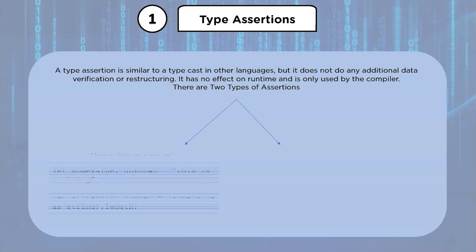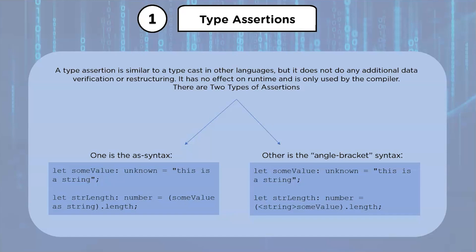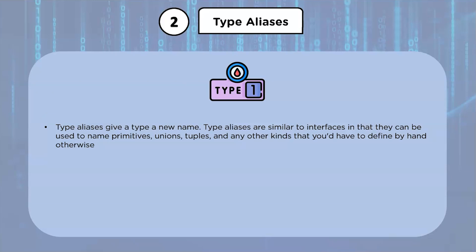There are two types of assertions: the as syntax and the angle bracket syntax. Both versions are identical — choosing one over the other is primarily a matter of preference. However, only the as-style assertions are allowed when combining TypeScript with JSX.